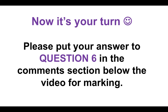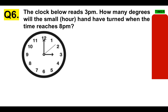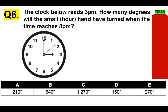Please put your answer to question 6 in the comments section below the video for marking. These are tougher — I'm going to give you a little bit more time. If you need to pause the video, that's absolutely fine; the important thing is you get the answer correct. The clock below reads 3 PM. How many degrees will the small hour hand have turned when the time reaches 8 PM? Is it A) 210 degrees, B) 640, C) 1270, D) 150, or E) 270?